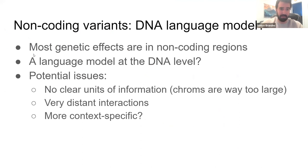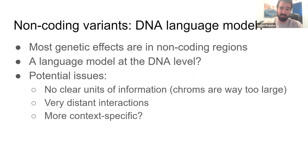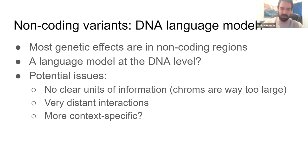Another promising direction is dealing with non-coding variants. Pretty much everything I've shown today applies only to coding variants, which are actually only a very small part of the genome — most genetic effects are in non-coding regions. For those variants, protein language models won't help; we'd need a different approach, such as DNA language models that work analogously at the DNA level. There are potential technical issues with training those models, but we think there are ways to address them.